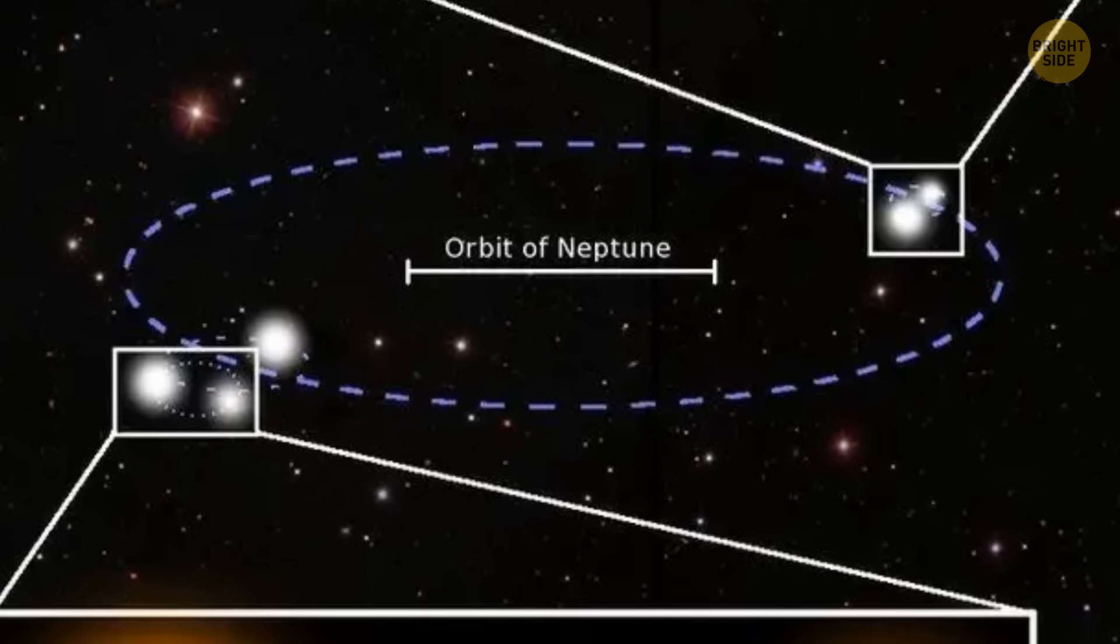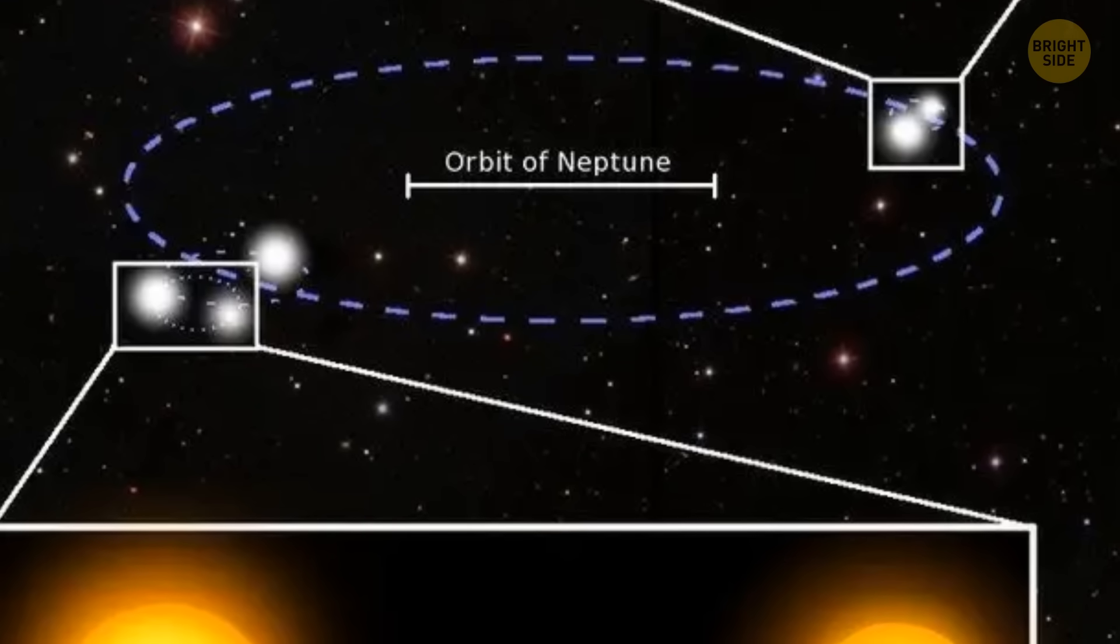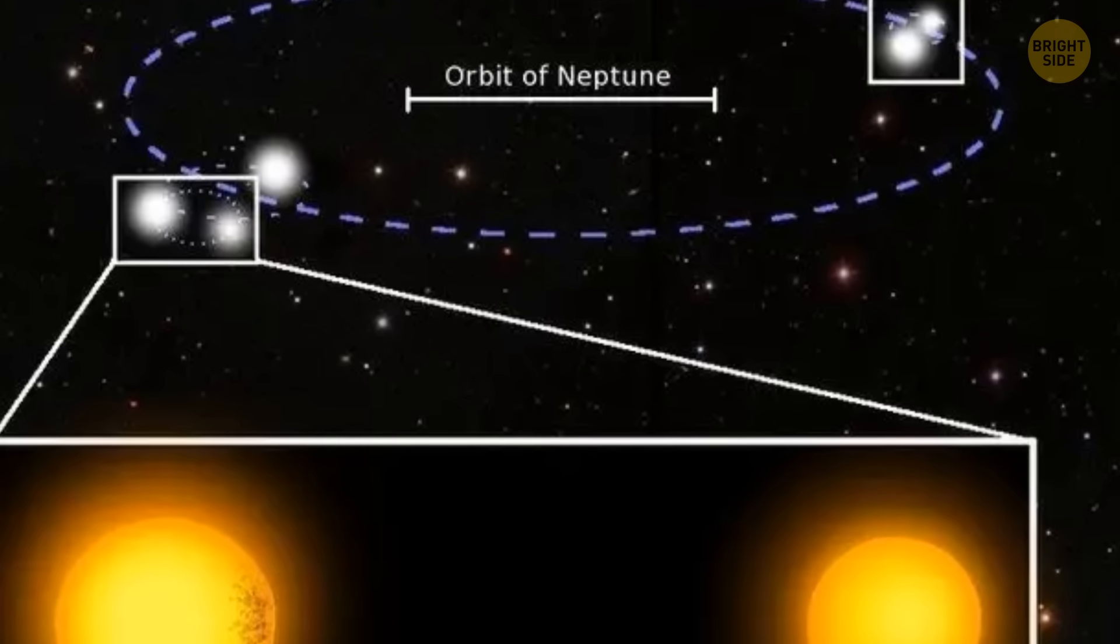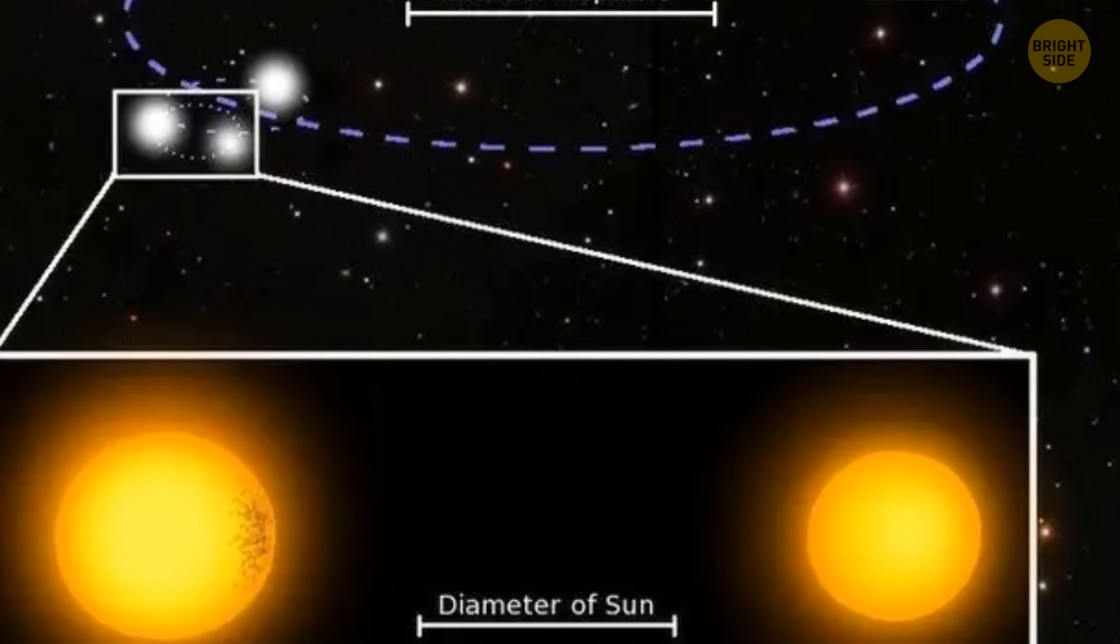All of the stars there were formed from the same disk of dust and gas, and now they're connected in one complex gravitational dance.